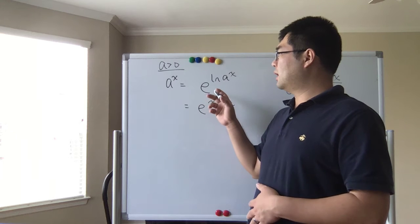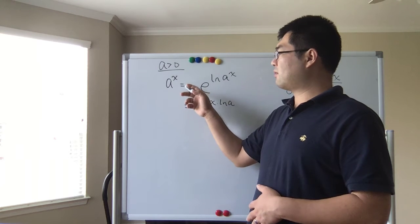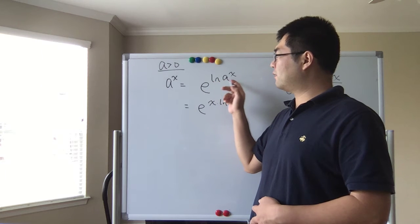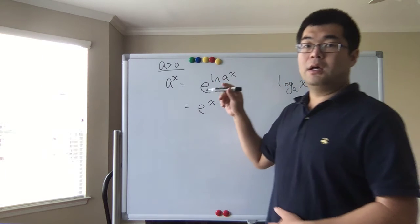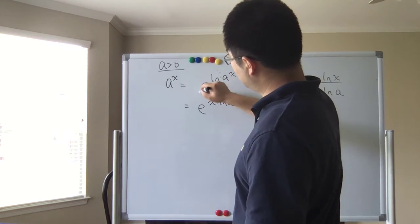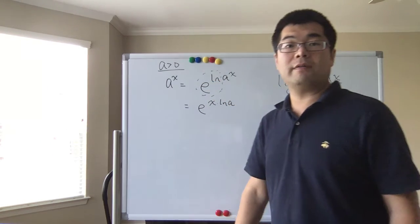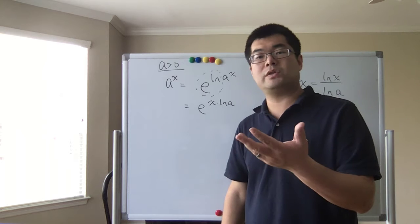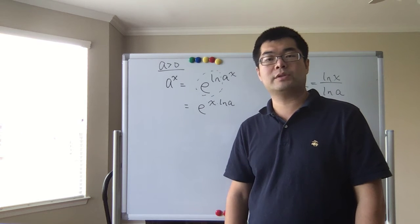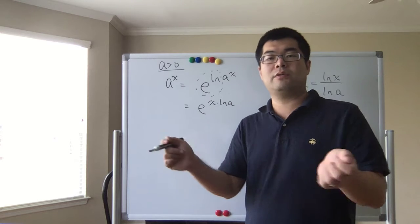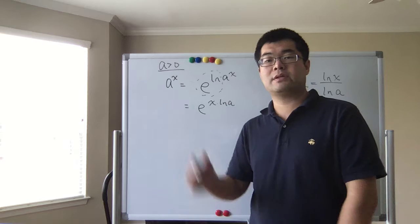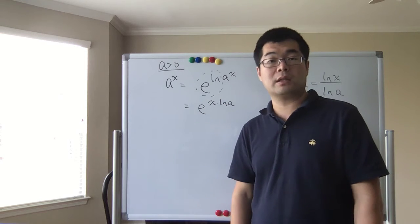The idea is actually very straightforward. Remember the relationship between the natural logarithm and the natural exponential: a to the power of x can be rewritten as e to the power of ln(a) times x. Keep in mind that e to the power of a natural log and the natural log are inverses of each other, so they can always cancel — that's how we get this rewrite.